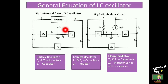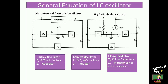The input is applied between terminals 1 and 3, and the output is taken across terminals 2 and 3. The output of the amplifier feeds the feedback network, which consists of impedances Z1, Z2, and Z3. The amplifier provides a 180-degree phase shift, while the feedback network provides an additional phase shift of 180 degrees, so as to satisfy the required condition for oscillation.